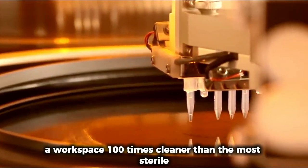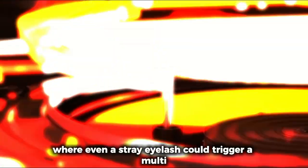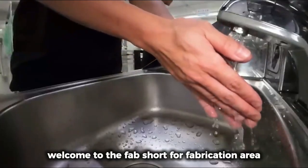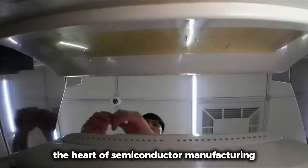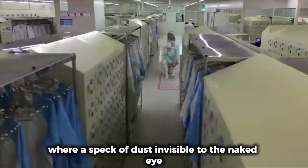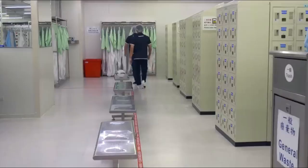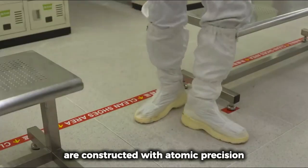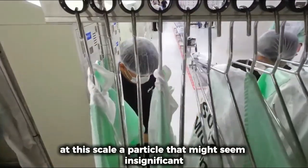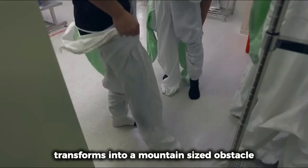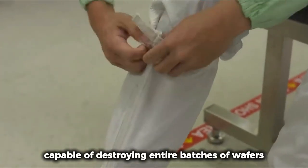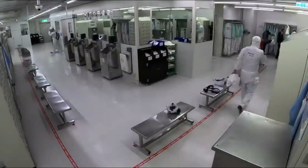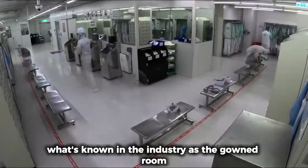That first battle in this immense manufacturing marathon isn't against technological limitations—it's against dust. Before a single fabrication process begins, Micron creates something that seems impossible: a workspace 100 times cleaner than the most sterile hospital operating room, where even a stray eyelash could trigger a multi-million dollar disaster. Welcome to the fab, short for fabrication area, the heart of semiconductor manufacturing, where a speck of dust invisible to the naked eye becomes a catastrophic threat.